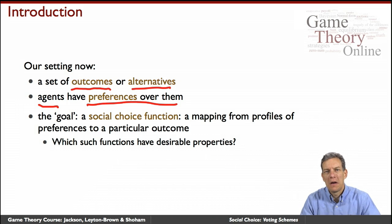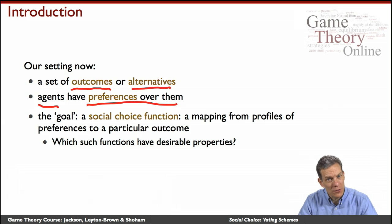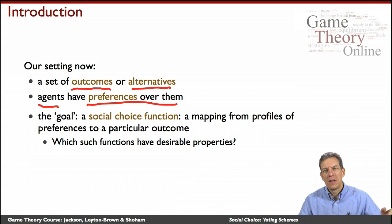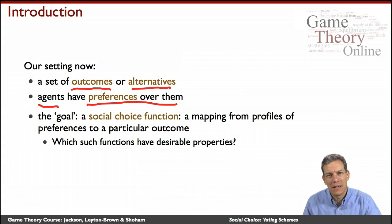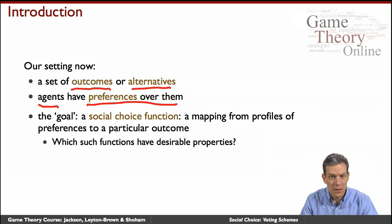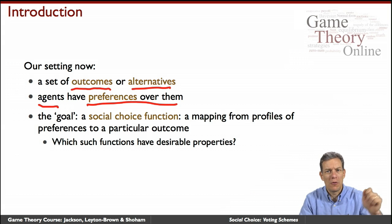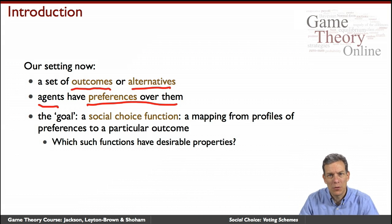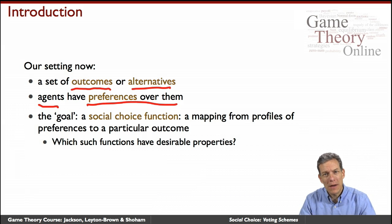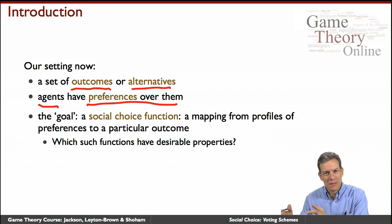Generally, we're interested in which of these social choice functions we'd like to have. In the course we'll eventually have to talk about incentives, because in a voting setting, I might not tell you truthfully which is my favorite candidate. I might vote for somebody else if I think my candidate has no chance of winning. So people might try to manipulate the voting scheme by changing how they represent their preferences.